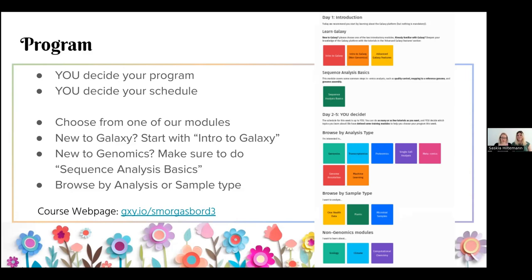We have a bunch of modules arranged by analysis type. So if you want to learn about transcriptomics, metagenomics, machine learning, things like that, you can pick a module. There are also some organized by sample type — so if you want to analyze health data, plant data, or microbial data, look at one of those modules. And we don't have just genomics tutorials — we also have non-genomics modules, so have a look at those as well.